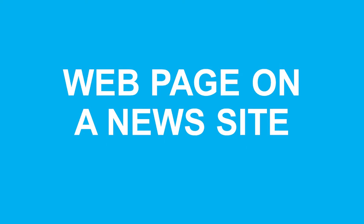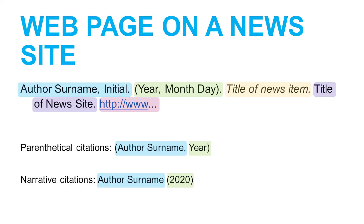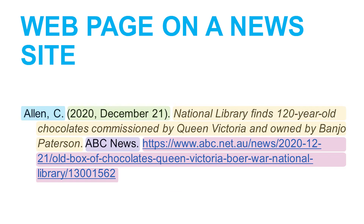The next resource type is a web page on a news website. A web page on a news website is different to an article in an online newspaper. If you need to reference an online newspaper article, please see the UON APA 7th Guide or the online resources APA referencing video. Here is an example from the ABC News website, written by Craig Allen and posted on the 21st of December 2020. Here are the corresponding in-text citations.